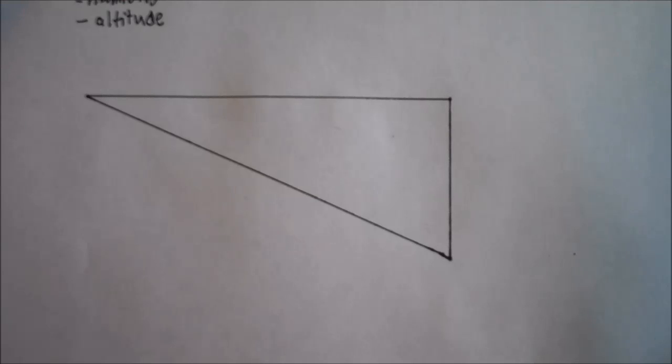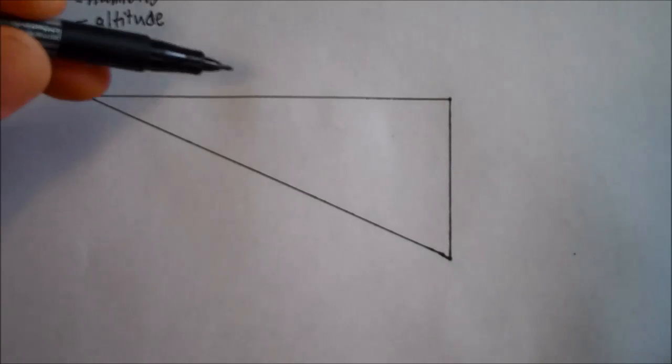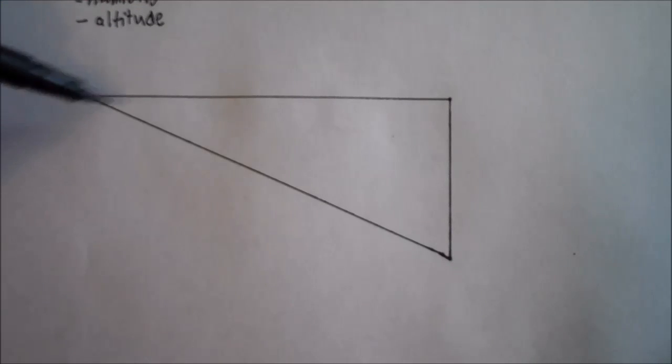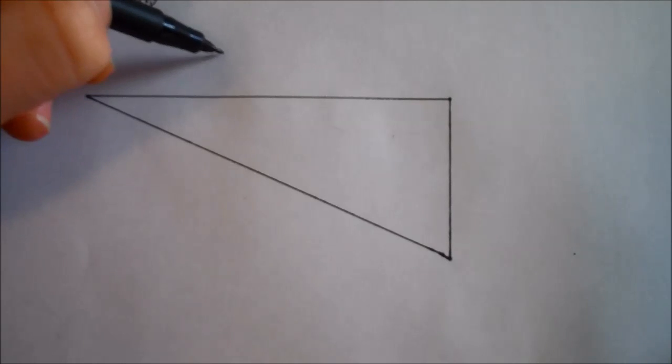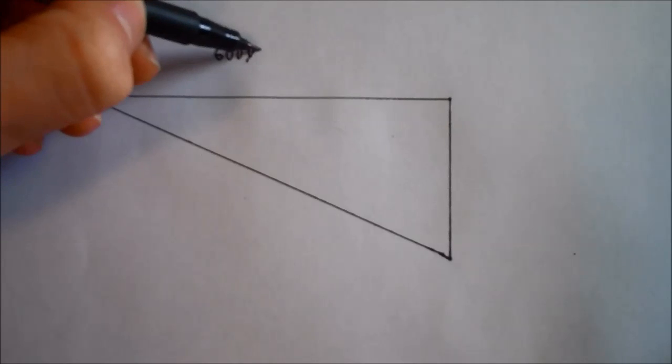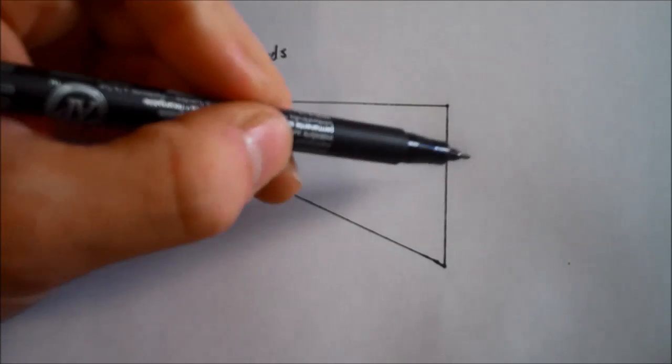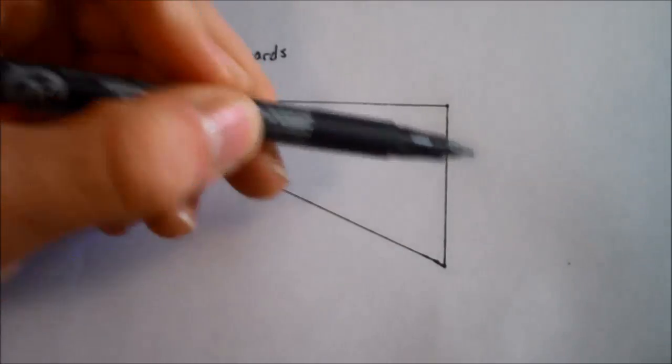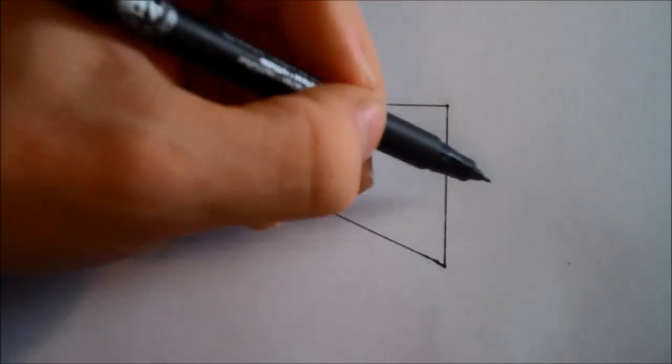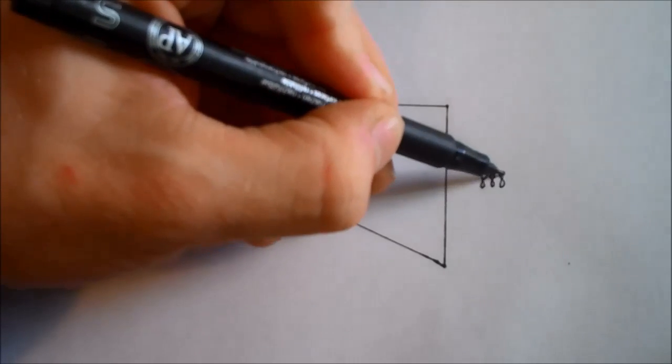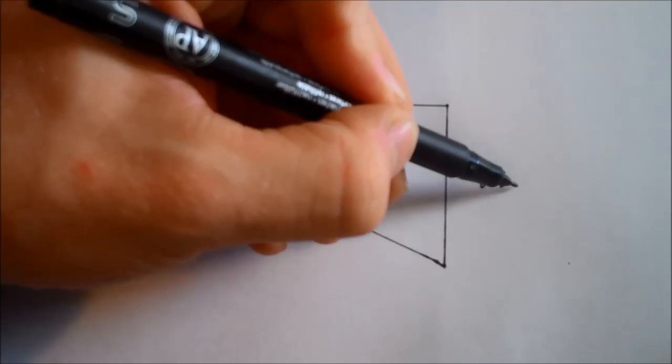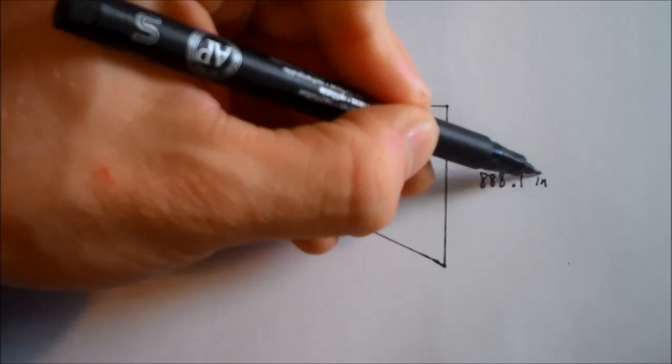So we're going to start out with a simple triangle. Just draw your triangle here. And then on the top, you're going to write the yardage that you're shooting at. So if you're shooting at 600 yards, you're going to put that up there. Then on the right side, you're going to put the amount of bullet drop that you're going to experience that you calculated from the ballistics calculator. 888.1 inches of drop.